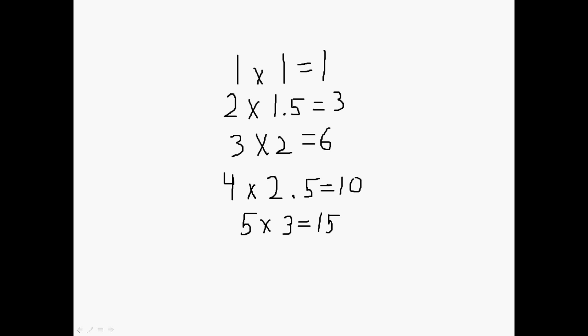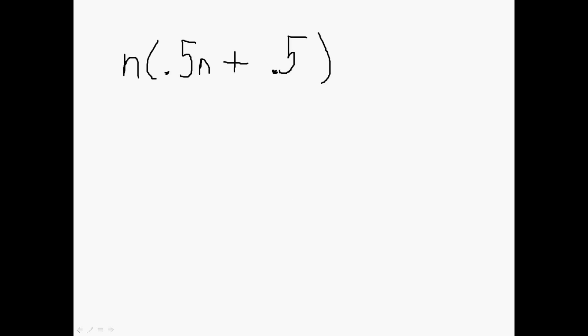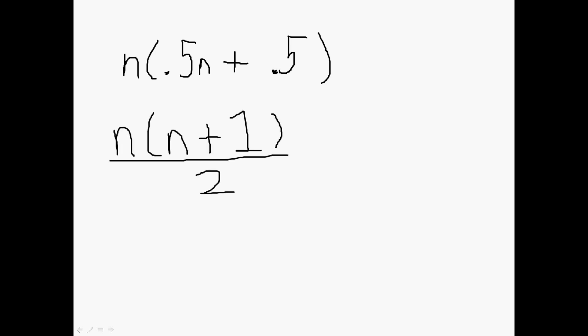I found that the pattern was n times (0.5n + 0.5). This is actually the way I figured it out on my own — in sixth grade, I was staring at my bathroom wall and there was a pyramid shape. I realized it just keeps going by 0.5, so it was n times (0.5n + 0.5). The actual way it's generally written is n times (n + 1) over 2 — it's the same thing, because you just pull out that one-half.